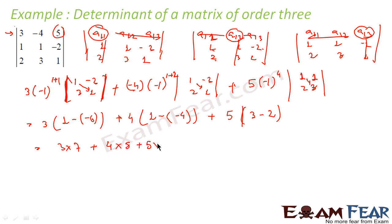So what I have got is this: 3 into 7 plus 4 into 5 plus 5 into 1, that is what we have got. Simplify this: 7 times 3 is 21, 5 into 4 is 20, and 5 into 1 is 5. And this is nothing but 46, and that is my answer. So what I have done? I have just expanded using row 1 and got the answer.